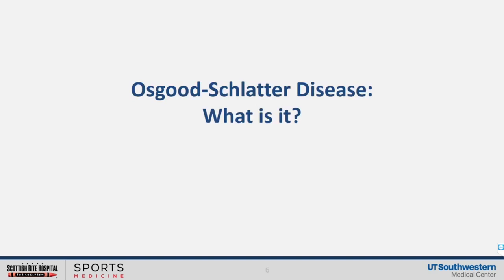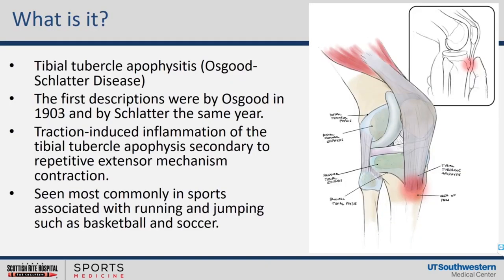Osgood-Schlatter disease — what is it? This is tibial tubercle apophysitis, also known as Osgood-Schlatter disease. It was described by Dr. Osgood and Dr. Schlatter back in 1903, so it has been recognized for a long time. The name is still very scary to families, so I reassure them that it is not a dangerous disease — Dr. Osgood and Dr. Schlatter simply wanted to name something after themselves. Again, it is an apophysitis.